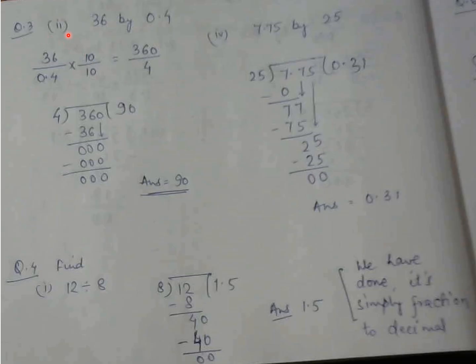Question number 3 is 36 by 0.4. Again divisor or the denominator is 0.4, so I will multiply it with 10 so that it becomes 4. 10 down means 10 up. See wherever I am doing the multiplication with the same number I am doing up and down, so that the value remains same. So 0.4 into 10 is 4 and 36 into 10 is 360. Now 360 by 4 will give you 90 on division.